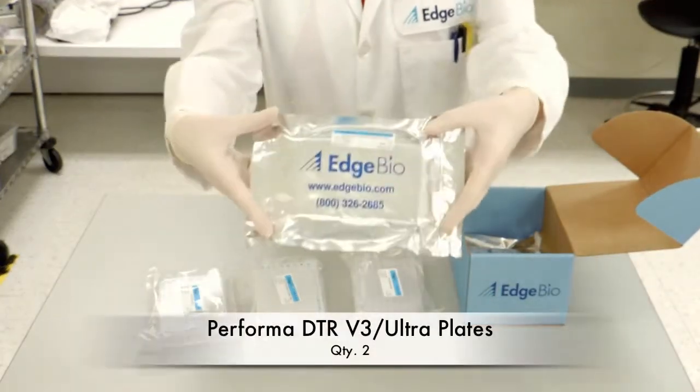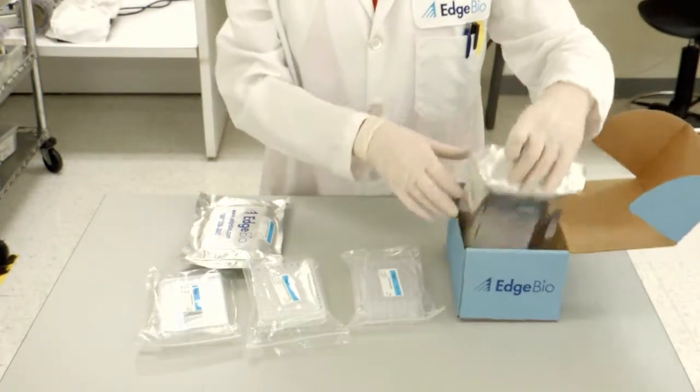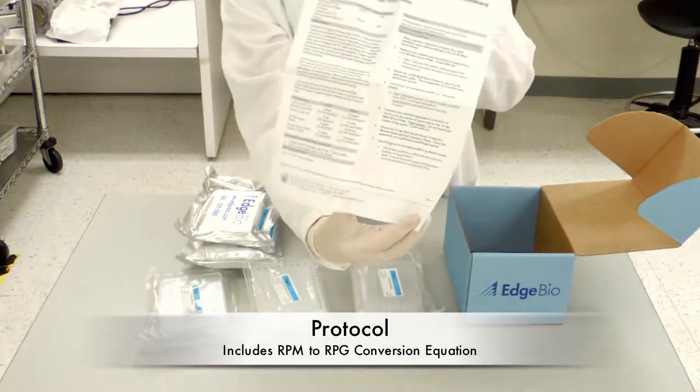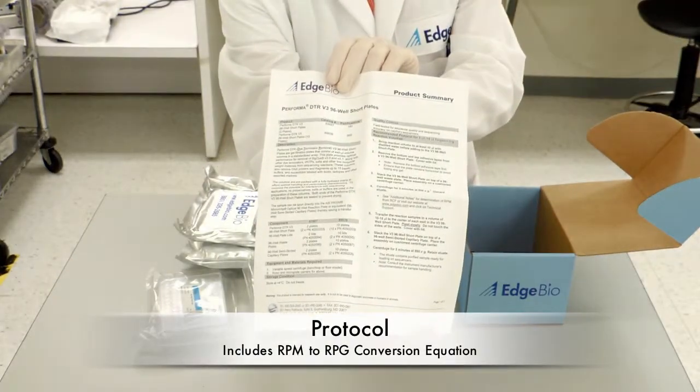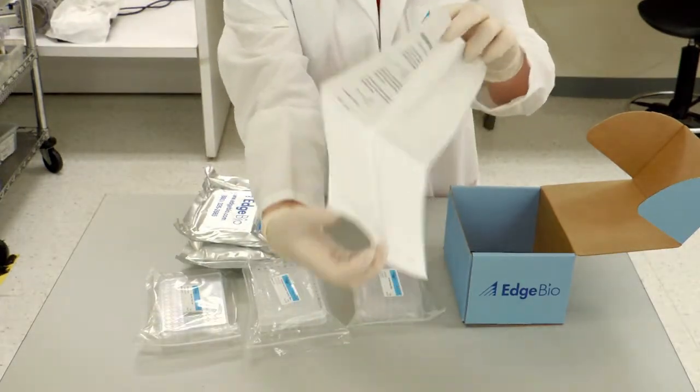Performa DTR plates, each individually wrapped within a foil pouch and labeled with a lot number, expiration date, and storage conditions, and finally, a protocol which contains detailed instructions about the product along with how to carry out RCF to RPM conversions.